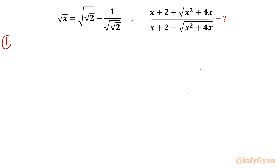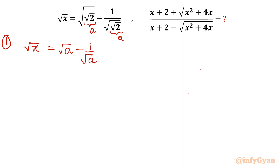I will solve this problem by considering this term as 'a', so this will also be 'a'. Our given equation in square root x can be written as square root of (a − 1/a). Now I will take the help of squaring — let's square both sides.